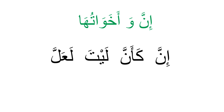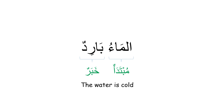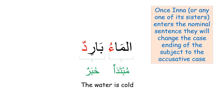Simple nominal sentences are made of a subject and a predicate, and as covered in early lessons, the subject and predicate are usually in the nominative case. With that in mind: once located in a nominal sentence, inna and its sisters show great interest in the subject and none in the predicate. They enter into negotiation with the subject and insist it changes its case ending to the accusative, while the predicate remains as is.